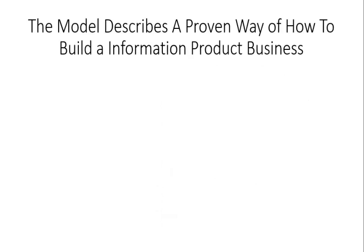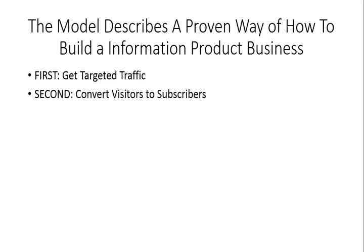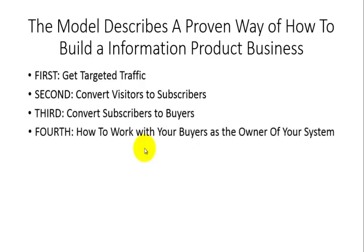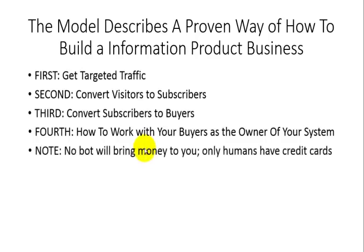This model describes a proven way to build an information products business. First, it's based on getting targeted traffic. Then converting those visitors to subscribers, and then converting those subscribers to buyers. It's also based on you, as the owner of the system, working with your buyers — not just as an affiliate or someone who has generated a lead. You will be the owner of your system. No bot or automated process is going to bring money to you. Only human beings have credit cards, and if you can provide value on a consistent basis to people you focus on, you're going to generate a significant income.